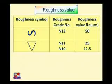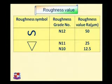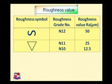The second symbol is one reverse triangle. Its roughness grade numbers are N11 and N10. The roughness RA values are 25 micron for N11 and 12.5 micron for N10. As we proceed from N12 to N11 to N10, the roughness value decreases by half each time: 50 to 25 to 12.5.